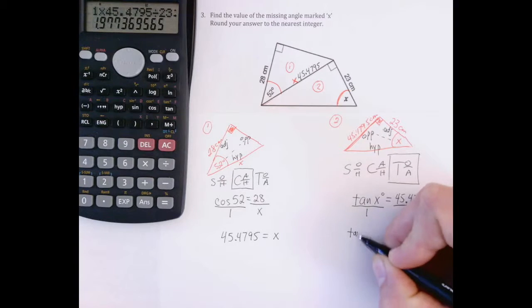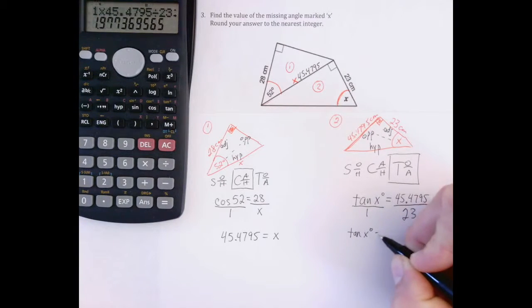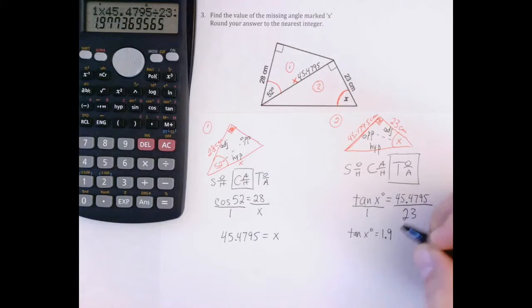So here I'm going to have 1 times 45.4795 divided by 23 equals 1.977369565. That's the tan, remember, of x degrees. Now you don't have to write this all out. I'm just doing it for the purpose of the video to be clear.